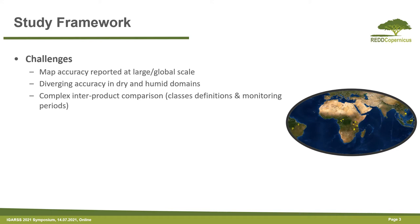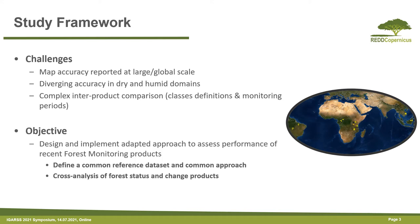The framework of this study addresses the challenge of mapping accuracy, which is usually reported at large and global scale, the issue of diverging accuracy in dry and humid domains, and the complexity of inter-product comparison where different classes have different definitions and different monitoring periods. Within this study, we focus on designing and implementing an adapted approach to assess performance of recent forest monitoring products, define a common reference dataset, and perform a cross-analysis of forest status and change products.